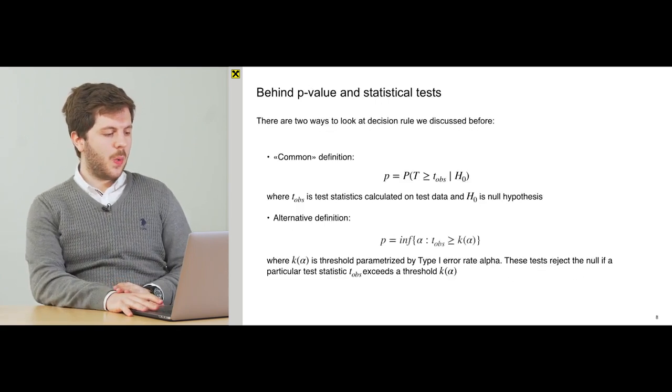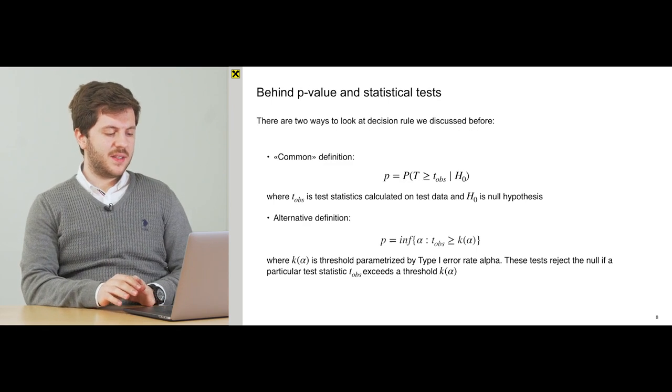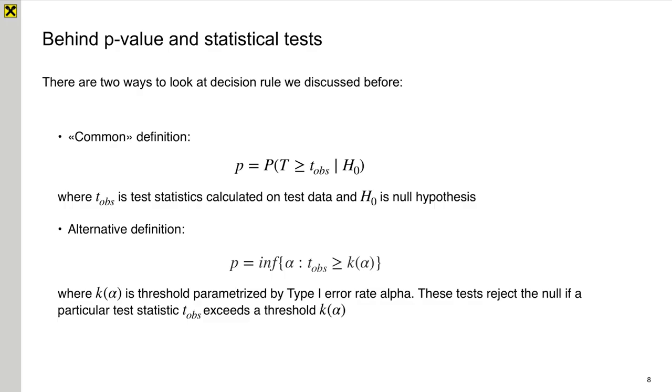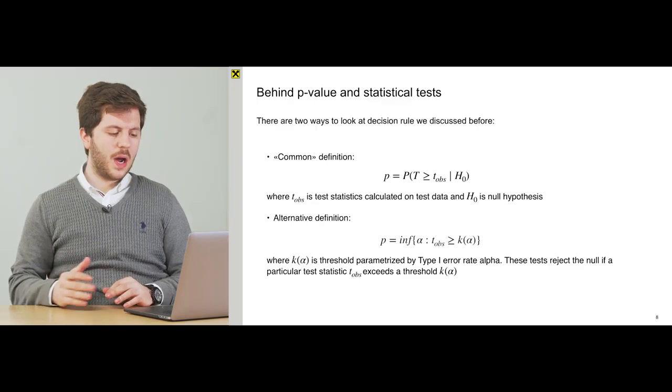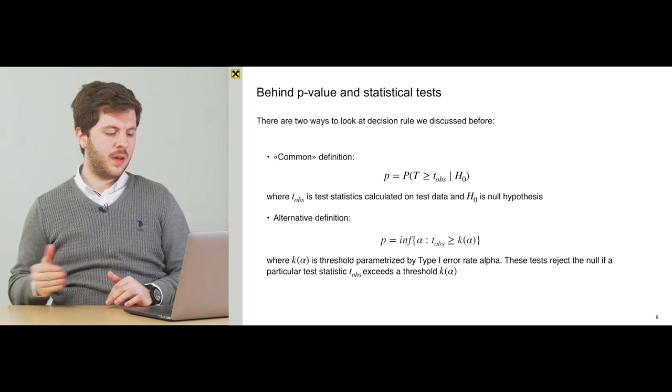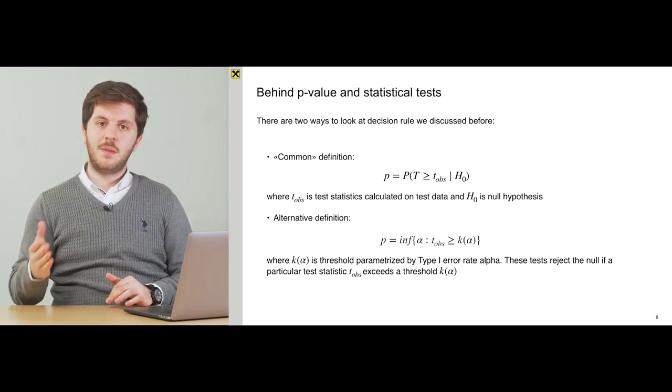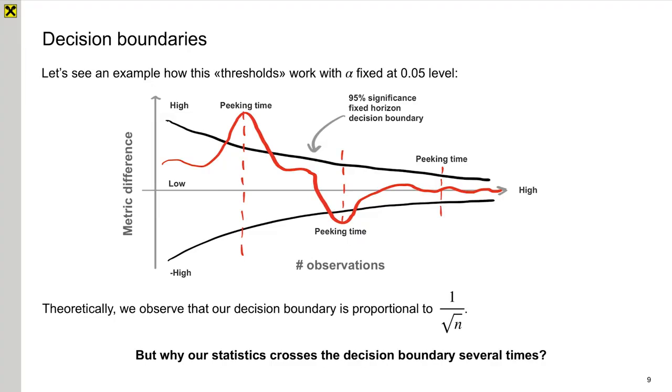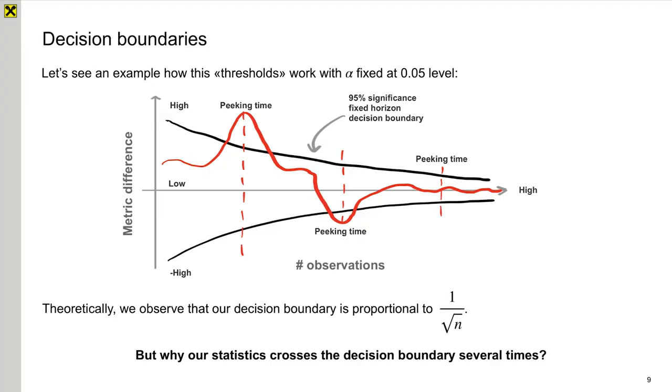And let's get back to our p-values and statistical tests and look more precisely at our second definition. We see that there is some decision threshold k-alpha. And I want to show you how does this threshold looks like in real A-B testing setup. And here I want to show you how this decision boundary works, how it looks like.